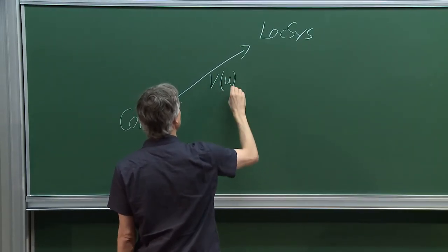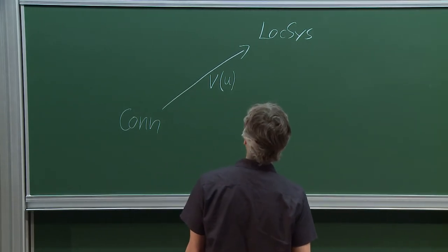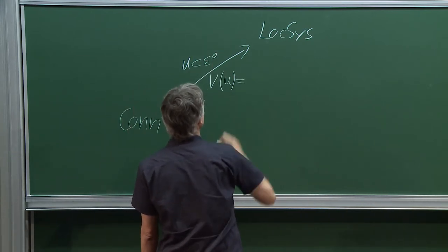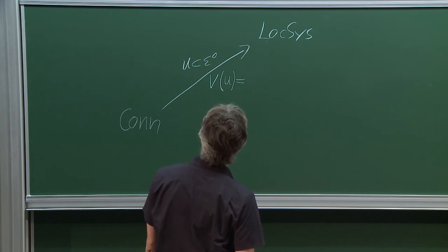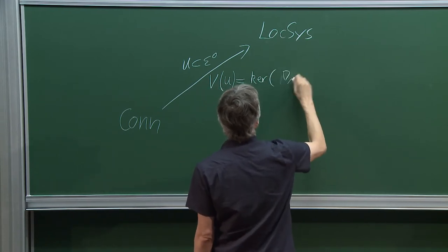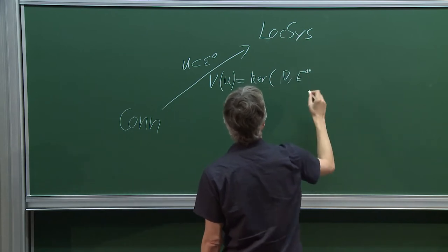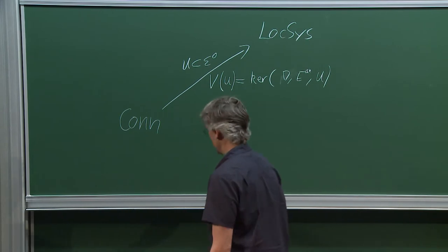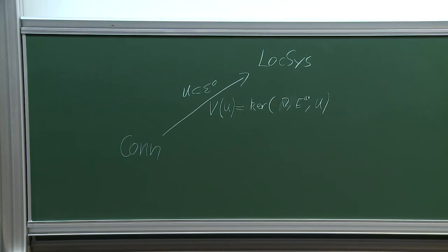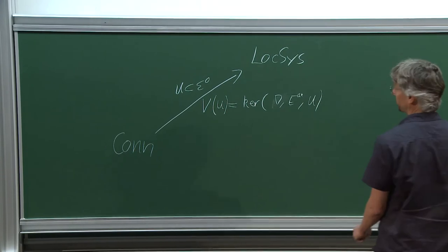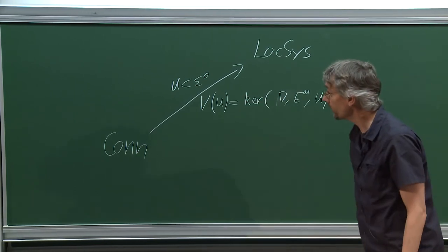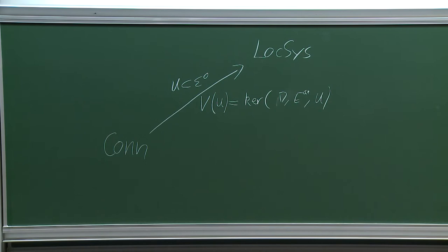If I have an open subset U, the sections of the local system on U are just the analytic solutions of the connection on that open set — the kernel of the operator nabla applied to the analytic vector bundle on U. Cauchy tells us that on a small enough disk we have a finite-dimensional complex vector space of dimension equal to the rank of the vector bundle E, and the local system is the object that these vector spaces form.